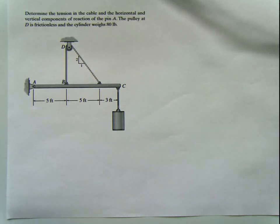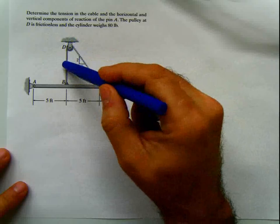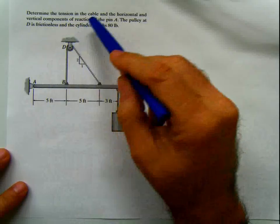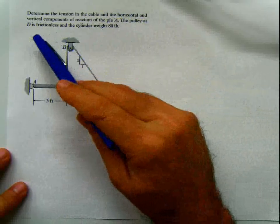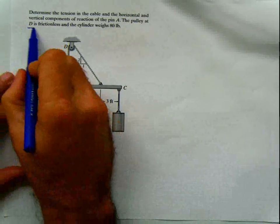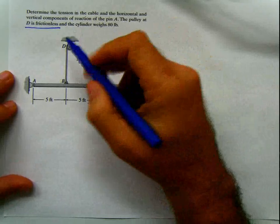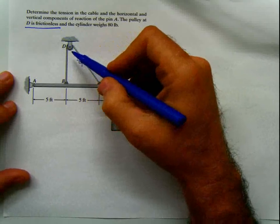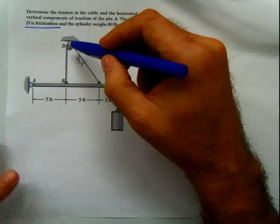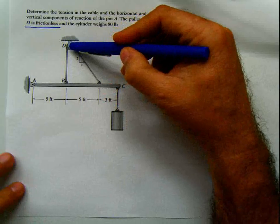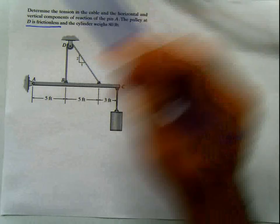So let's check out this problem. It says: determine the tension in the cable and the horizontal and vertical component of reaction of the pin A. The pulley at D is frictionless — that's very important here, frictionless. And the cylinder weighs 80 pounds. This is really important because, and this is something you have to remember, I stress this a lot during class.